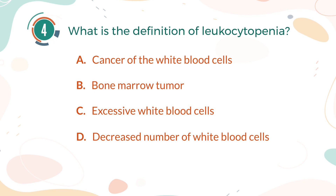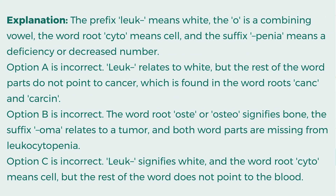The correct answer is D. Decreased number of white blood cells. Explanation: The prefix leuk means white, the o is a combining vowel, the word root cyto means cell, and the suffix penia means a deficiency or decreased number.